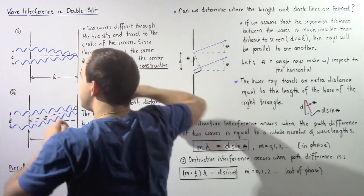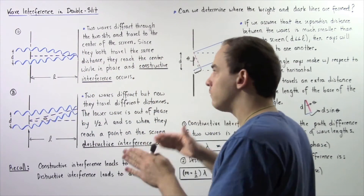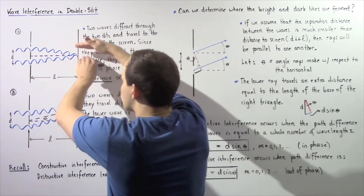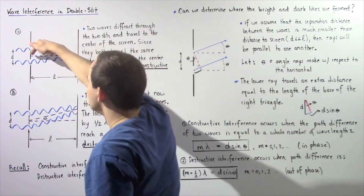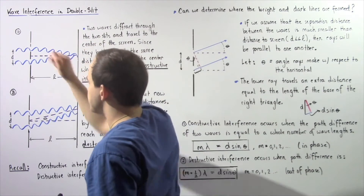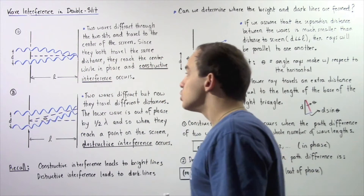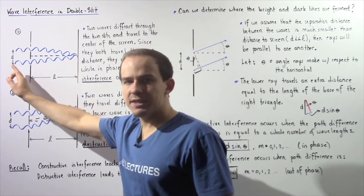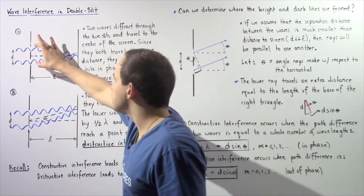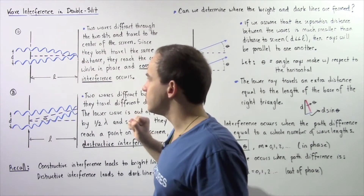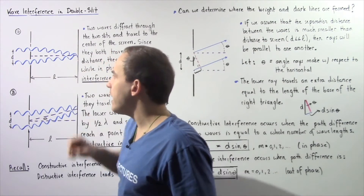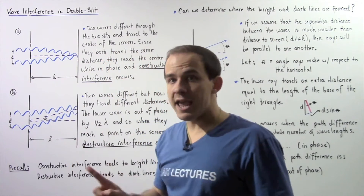They initially begin in phase and both travel along the same general direction along the horizontal axis, as shown by the purple dashed line. Because they initially begin in phase and travel the same distance, if we assume that the wavelength of these two waves is the same,